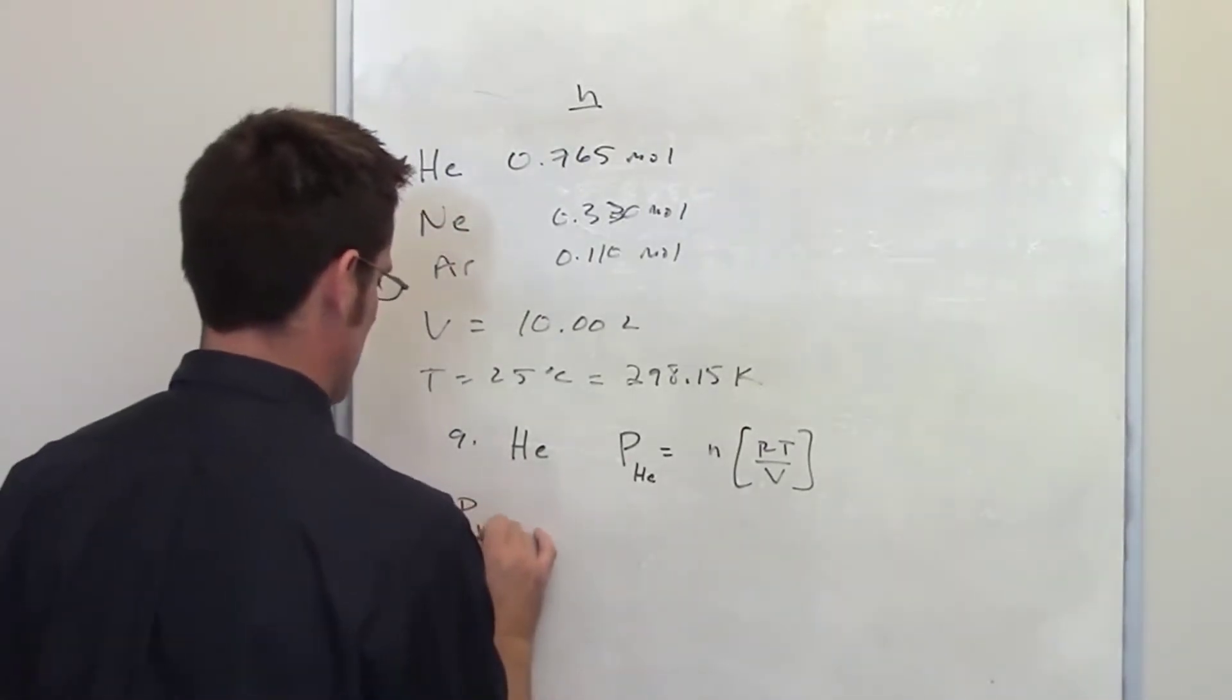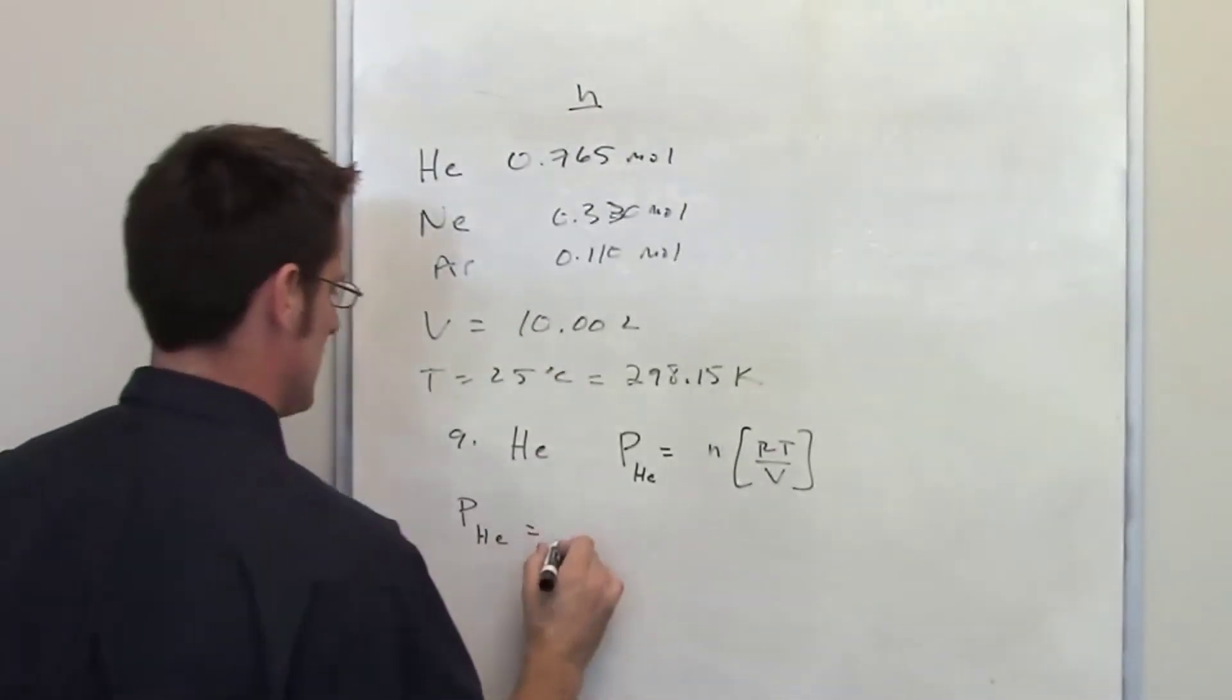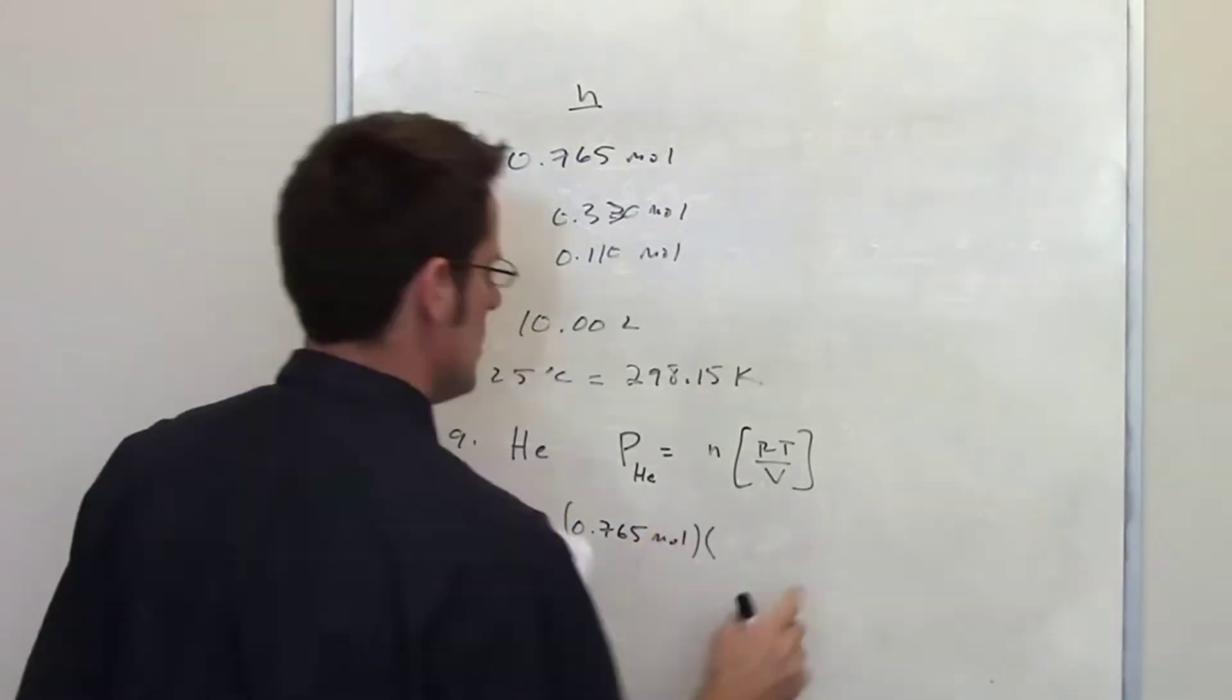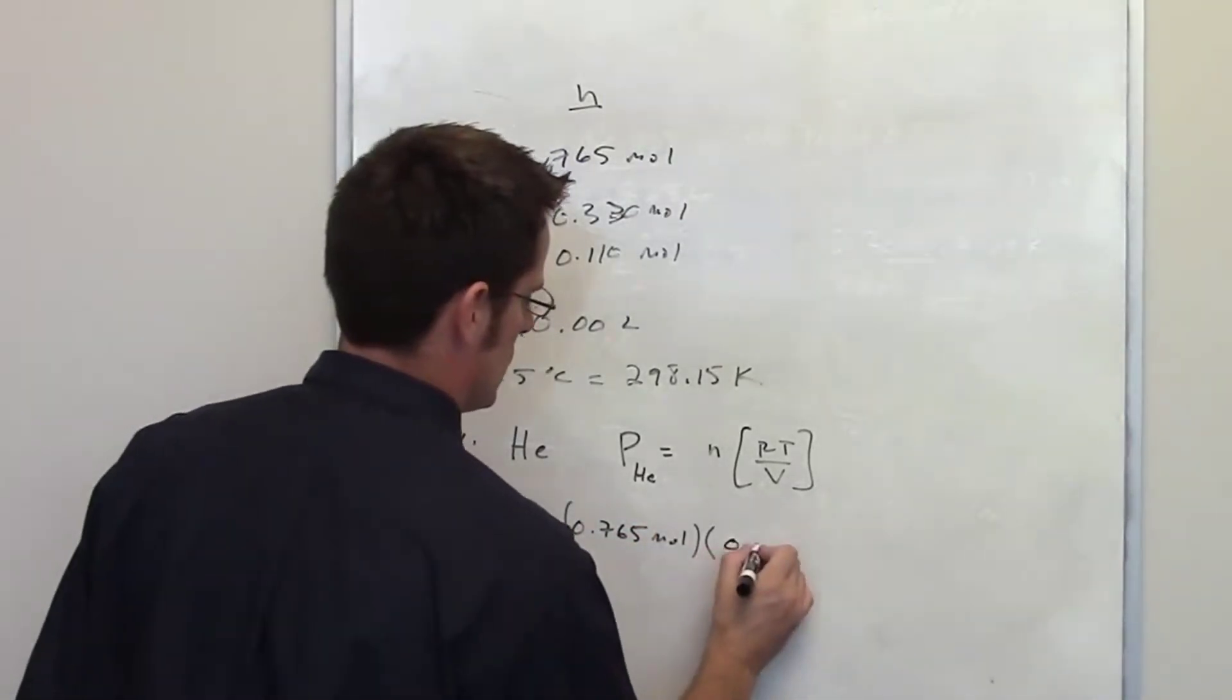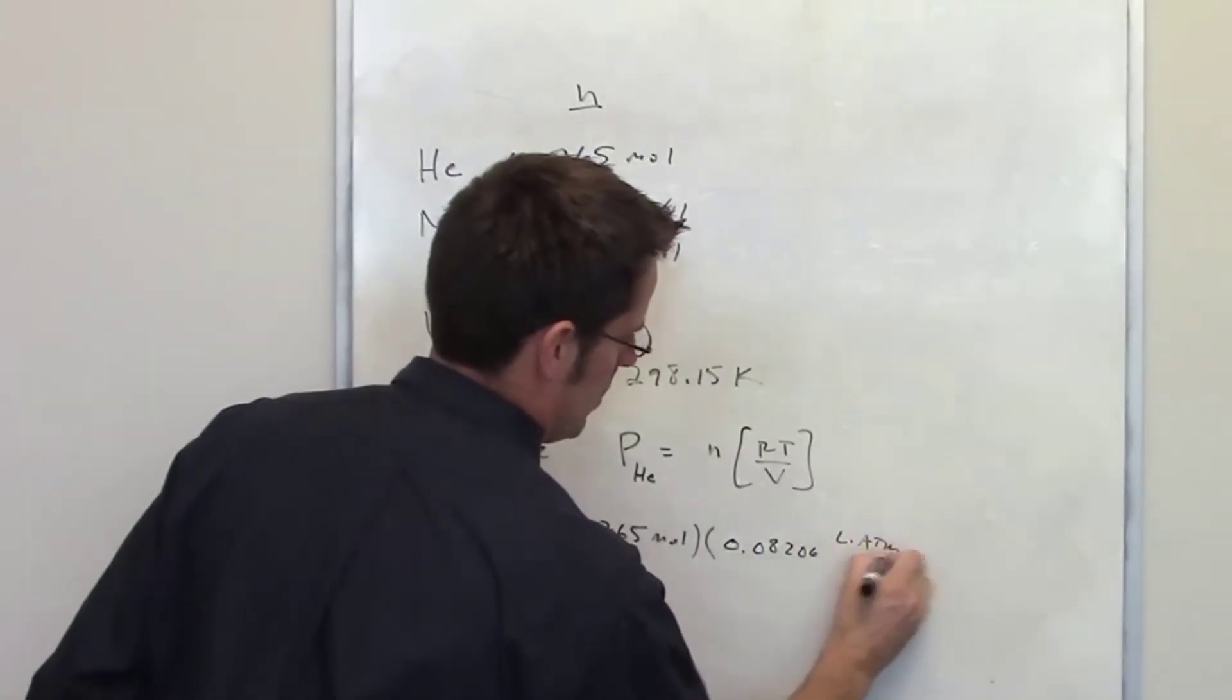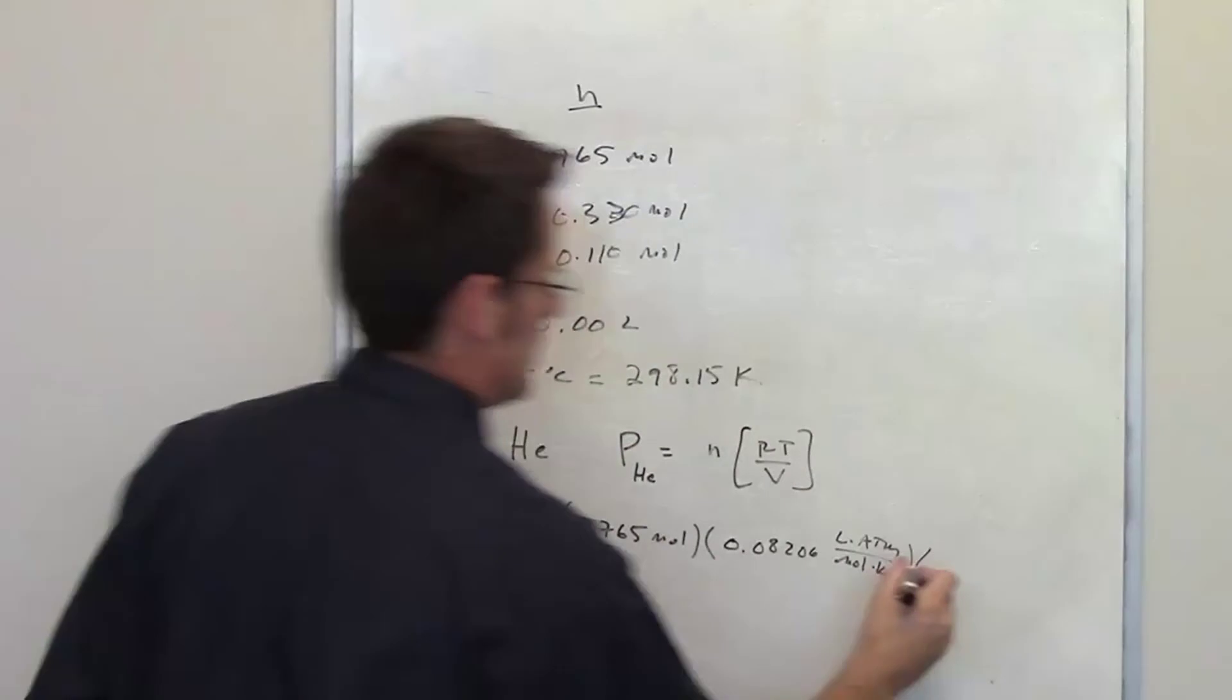So the pressure of helium is going to be equal to the number of moles of helium, which is, once again given to me, 0.765 moles, multiplied by the ideal gas constant, which is 0.08206 liter atmospheres per mole kelvin, multiplied by temperature, which is 298.15 kelvins.